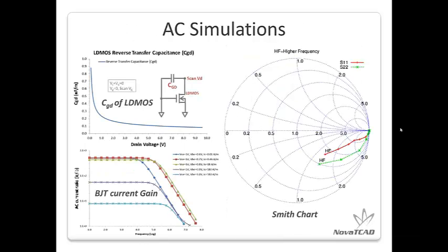Here are some AC simulation examples with transfer capacitance. We can see the BJT current gain plotted against frequency. On the right, the Smith chart was created by APSIS.